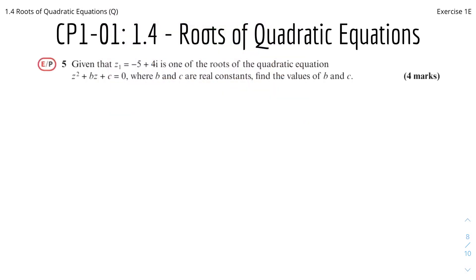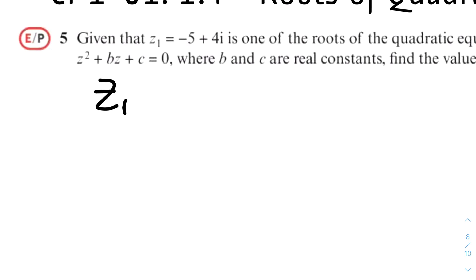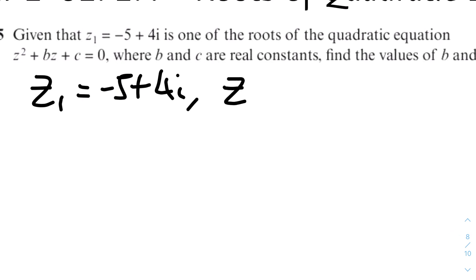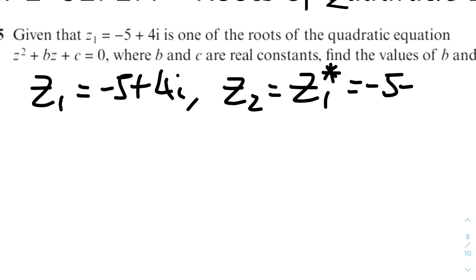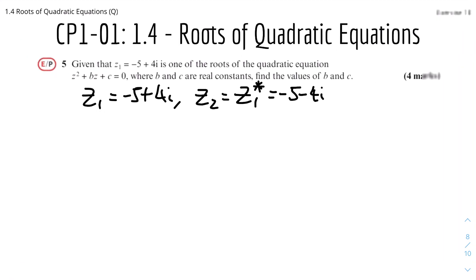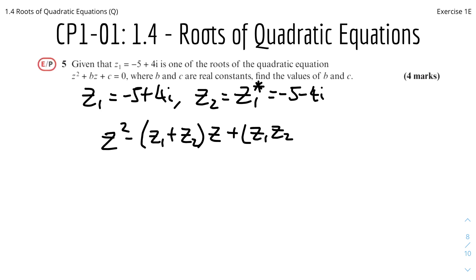Moving on to the next question. Given that z1 equals minus 5 plus 4i is one of the roots for a quadratic equation, find the quadratic equation in the form z squared plus bz plus c equals 0 where b and c are real constants. Knowing that z1 is the root, the other root z2 must be the complex conjugate of z1, which equals minus 5 minus 4i. So the quadratic equation is z squared minus (z1 plus z2)z plus z1·z2 equals 0.